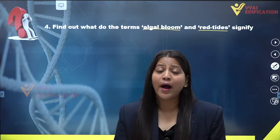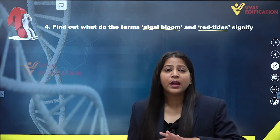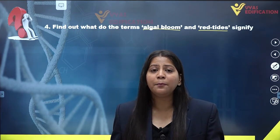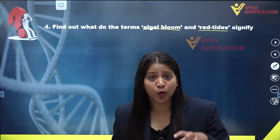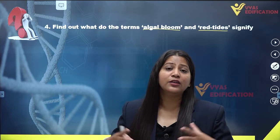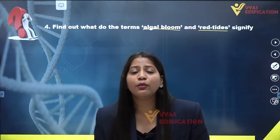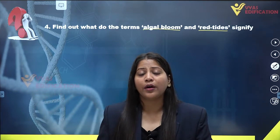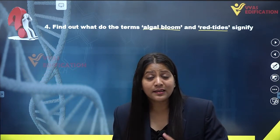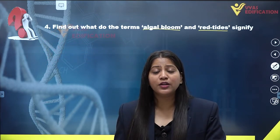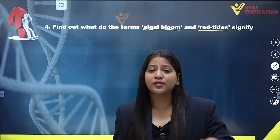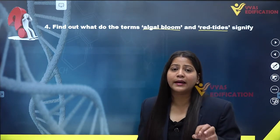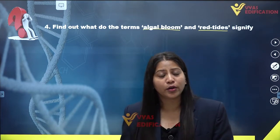Algal bloom is a rapid increase in the number of blue-green algae or cyanobacteria. When their numbers increase in a water body, they feed on the organic matter present in the water body. To do so, they require more oxygen, which increases the biological oxygen demand — BOD — and this causes the death of fishes and other aquatic animals.